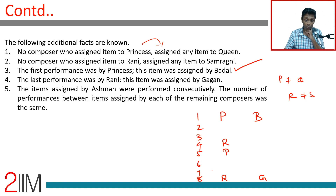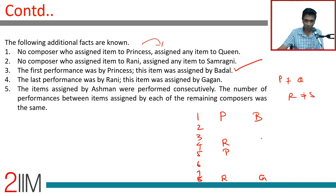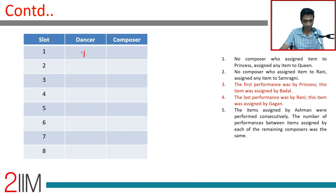The items assigned by Ashman were performed consecutively. The number of performances between items assigned by each of the remaining composers was the same. Out of the first four, Ashman should have done one, and in the next four he should have the second — or they are consecutive. So we have P and B, and R and G established so far.